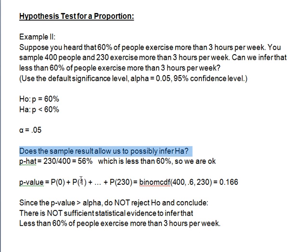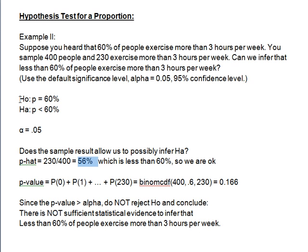A very important question is: why don't we automatically infer that the population is less than 60% based on this sample? The answer is that sample results vary, and it is conceivable to get this sample result even if the null hypothesis is true — it could be within sampling chance. We have to see how unlikely this is. If it's really unlikely under the assumption of the null hypothesis, then the null hypothesis is probably false and we infer the alternative. How unlikely does it have to be? Less than our willingness to make a Type 1 error — less than alpha. Type 1 error is wrongly rejecting a true null hypothesis.